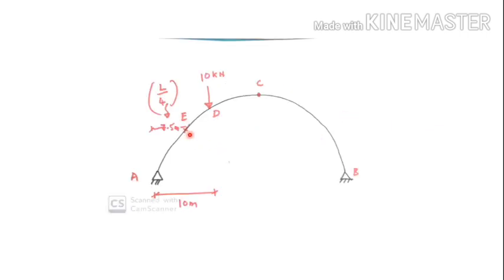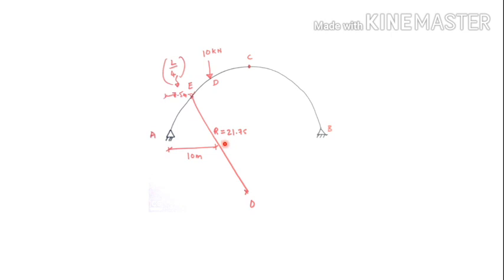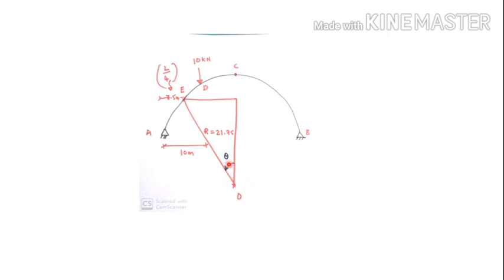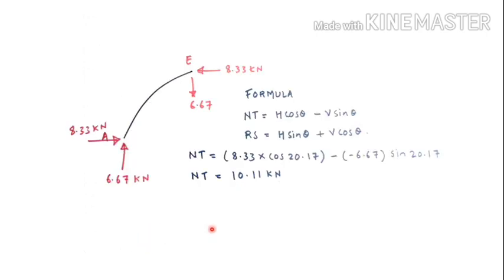At this point we need to find the normal thrust and radial shear. We have to join this point with the center and we know the radius, we have already calculated in the previous video, r equals 21.75. So this theta we are talking about, we can use trigonometry function. Sine theta equals opposite, this is 7.5 divided by hypotenuse, so theta is 20.17 degrees.